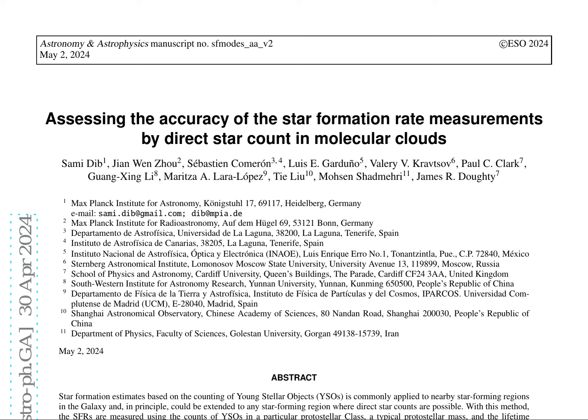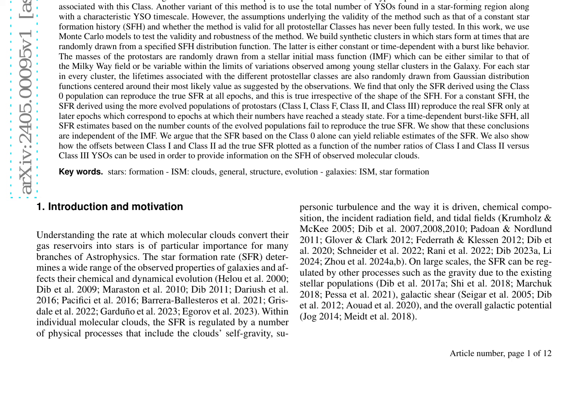The findings indicate that only the SFR derived using the class 0 population can reproduce the true SFR at all epochs, regardless of the shape of the SFH. In contrast, SFR estimates based on more evolved populations of protostars — class 1, class F, class 2, and class 3 — only reproduce the real SFR at later epochs when their numbers have reached a steady state. This holds true for both constant and time-dependent SFH scenarios, and is independent of the IMF.